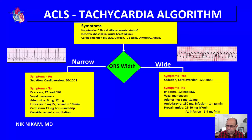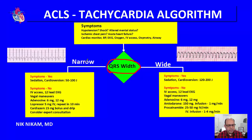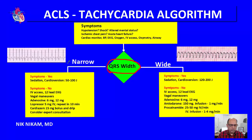Once you have done this, look at the 12-lead electrocardiogram or get a rhythm strip on the monitor. Look for the QRS complex. If the QRS complex is narrow, we follow one path. If the QRS complex is wide, we follow a different pathway.